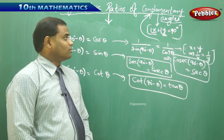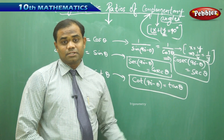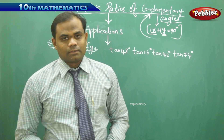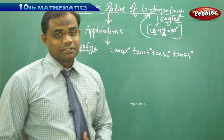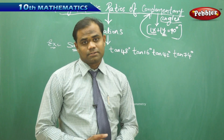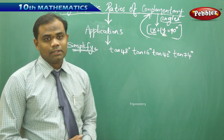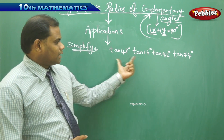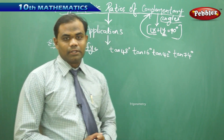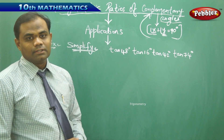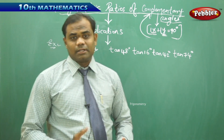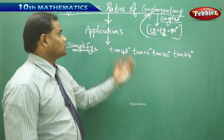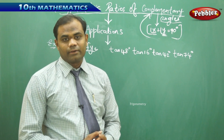So the trigonometric ratios of complementary angles are connected with six basic formulae: sine, cos, tan, cosecant, secant, and cot, each differing by 90 degrees. Let's now see the applications of these formulae. One type of application is where trigonometric ratios appear in a product, and we use formulae like sin(90 − θ), cos(90 − θ), or tan(90 − θ) to simplify. These kinds of problems are simplified using the topic of trigonometric ratios of complementary angles.